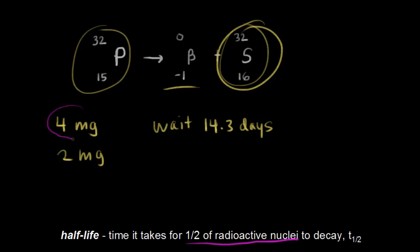If we start with four milligrams and we lose half of that, then we're left with two milligrams. And it took 14.3 days for this to happen.